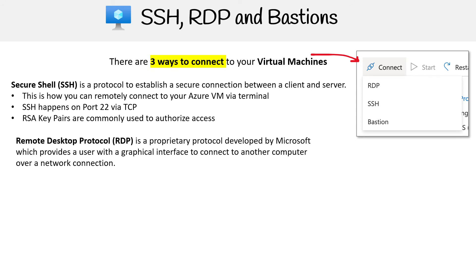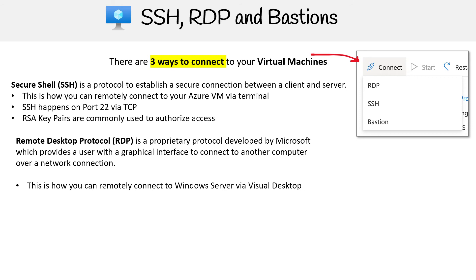Another way of getting access to your machine is by using RDP, which is Remote Desktop Protocol. This is a proprietary protocol developed by Microsoft, which provides a user with a graphical interface to connect to another computer over a network connection. Basically, it's going to open up a window and you're going to be able to see another Windows desktop in it and control it remotely. This is how you can remotely connect Windows Server to a virtual desktop. RDP happens on port 3389 via TCP and UDP.